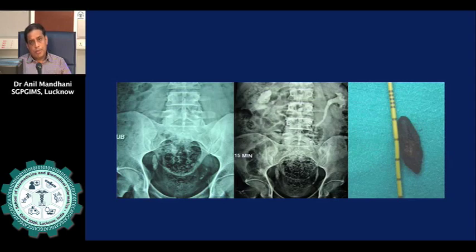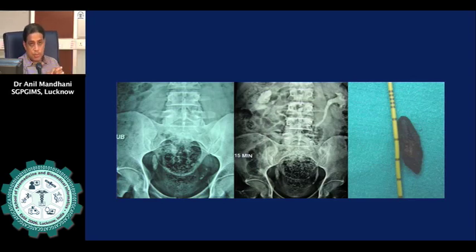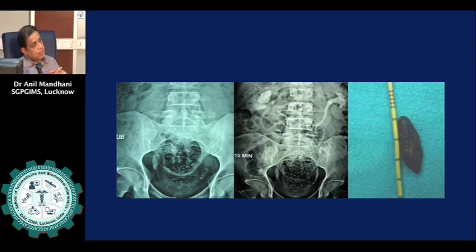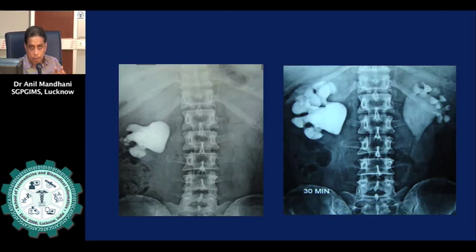Urodynamic study is a urologist's domain. There are situations where we need to know the bladder pressure — for example, a patient diabetic for 20 years with voiding dysfunction, or someone with disc protrusion or a neurological disorder. A 60-year-old with obstructive symptoms may be diagnosed as BPH, but if he has diabetic neuropathy or a neurological problem and urodynamics are not done, surgery may still fail to relieve his symptoms because the problem was in the bladder, not the prostate.